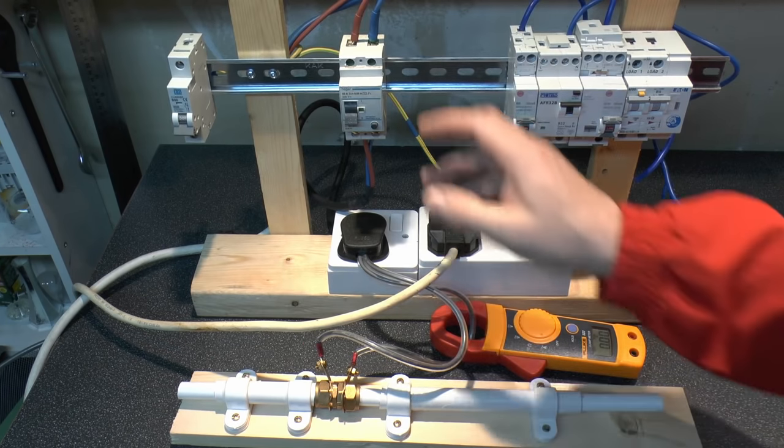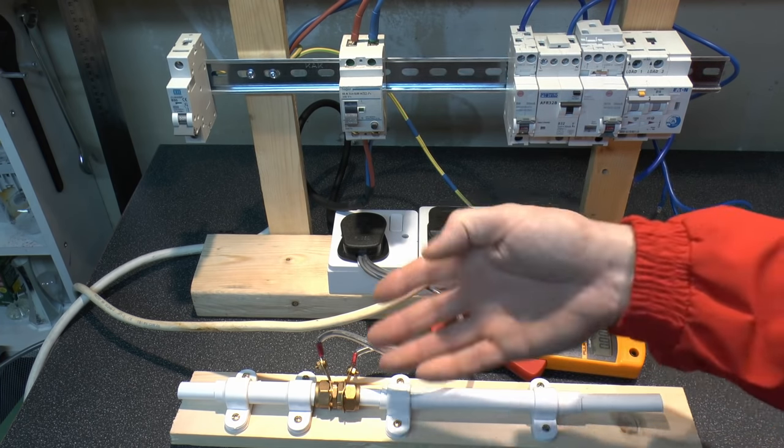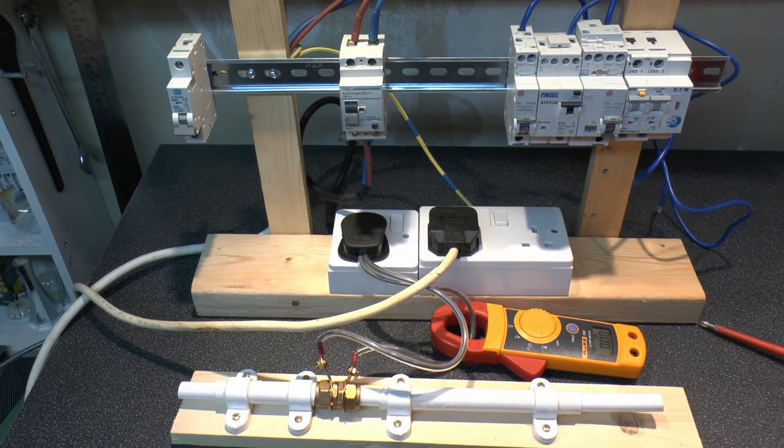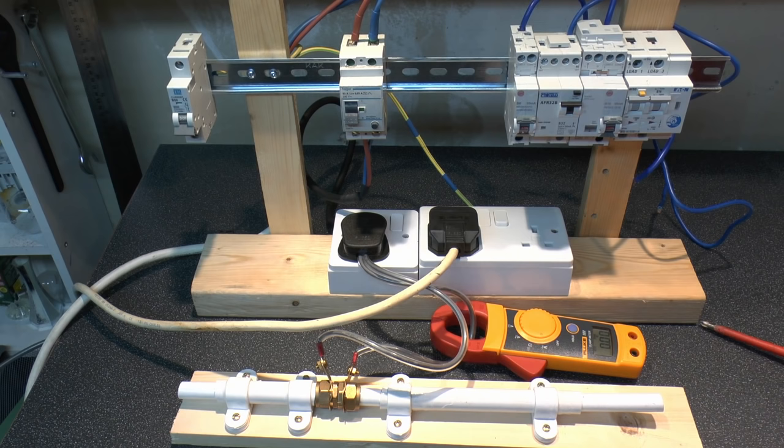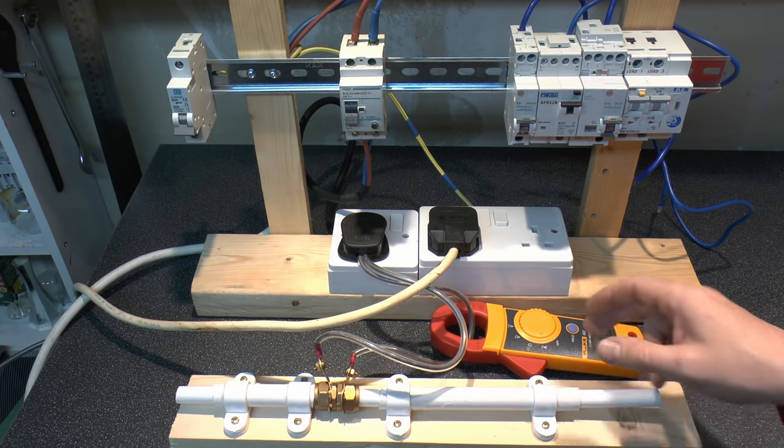Now just to complete this, what we've got here is just a normal RCD, so this doesn't have any arc fault detection device in it, and therefore with any arcing that will happen, of course this won't trip or in fact do anything at all. I'll just do the same again with the arcing here, but what we'll do is actually zoom in onto the contacts themselves, so you can see what kind of arcing actually goes on there with the three power settings that we used before.